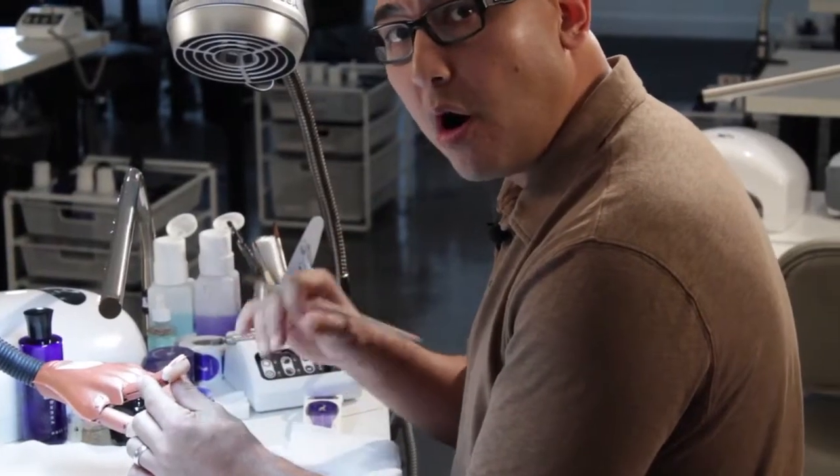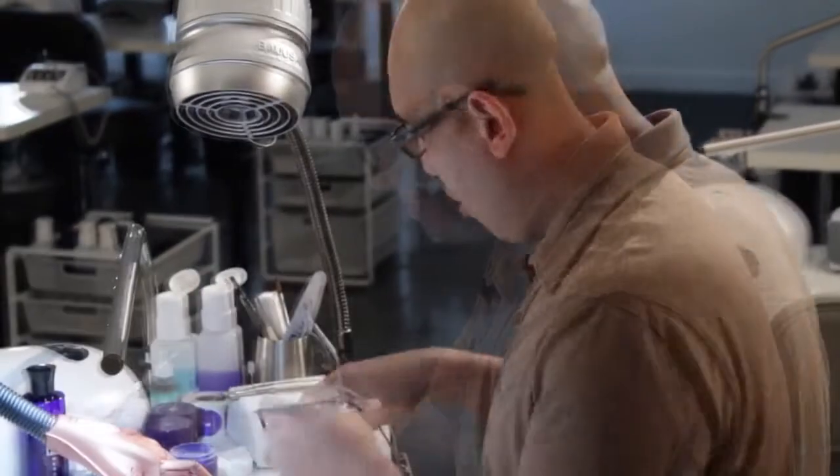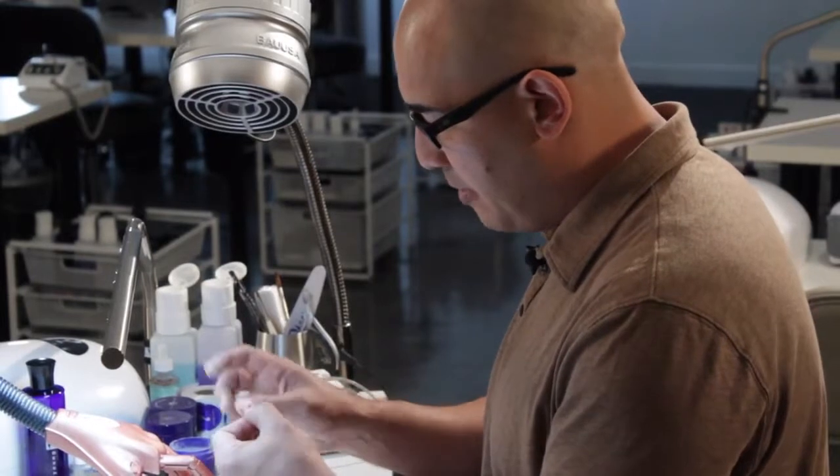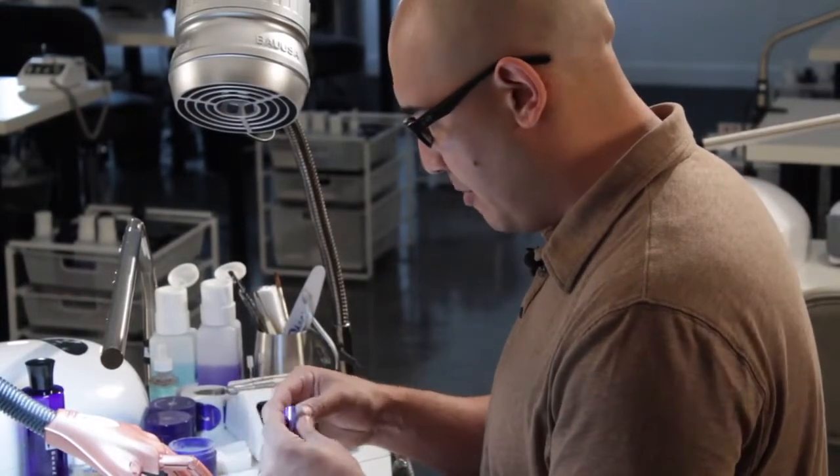Now we're ready for the white application. We're going to take our nail form and apply this to the bottom. We're going to pre-pinch this.